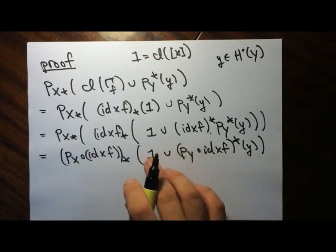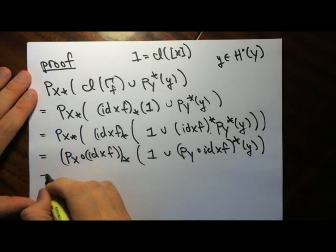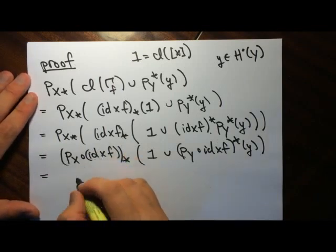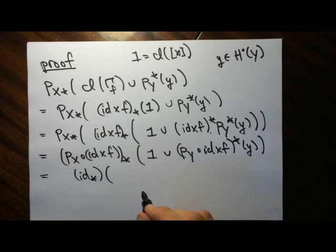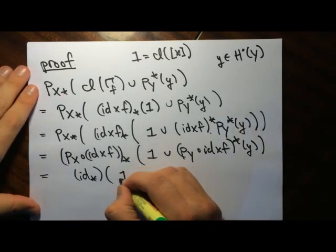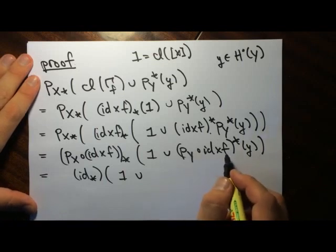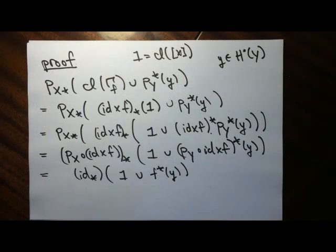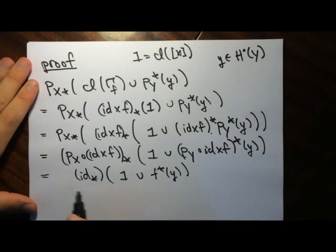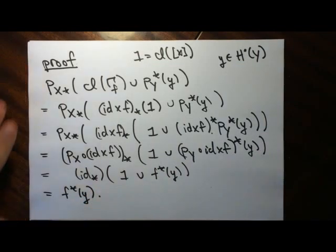Now we can pull this back: p_Y composed with identity cross F of y. At this point, the unit 1 is the unit for the ring so it's just 1. When we project onto X this becomes the identity pushforward on X, and this becomes the pullback of y. And so this becomes F star of y. That's the proof.